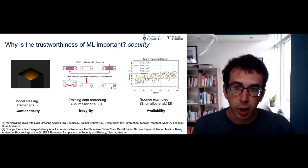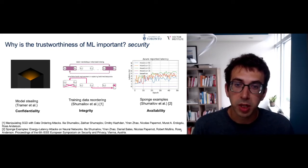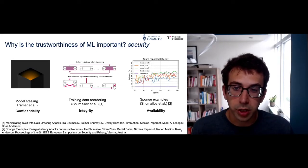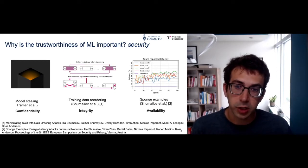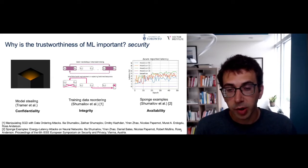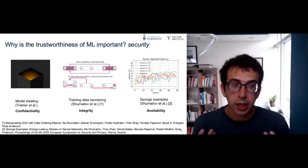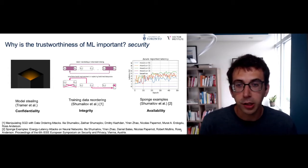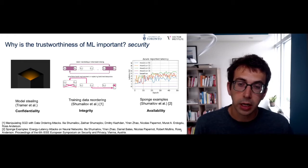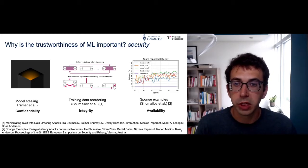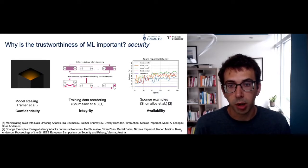The second component, perhaps the most researched one, is integrity — the idea that we want to prevent our machine learning system from being manipulated by an adversary trying to force it to produce incorrect output. This can happen at both training and test phases. In the training phase, there has been a lot of work on poisoning attacks. One of my visiting students, Ilya Shumailov, demonstrated that you can poison ML models without inserting any poison in their training data, simply by reordering the order in which the training algorithm analyzes the data — because this violates the stochastic assumption made in optimizers like stochastic gradient descent.